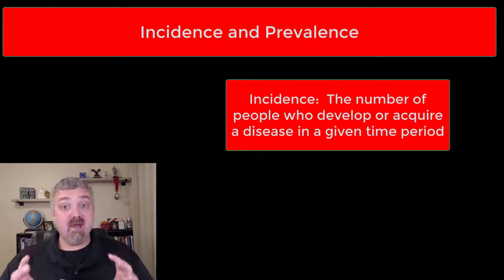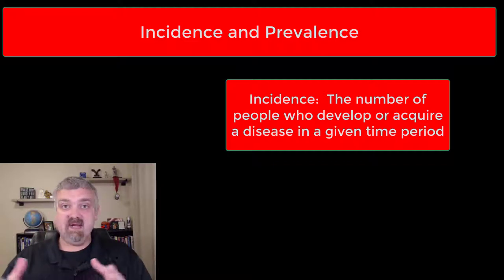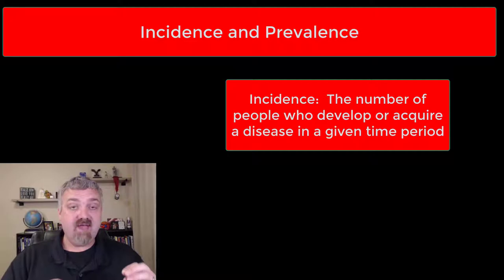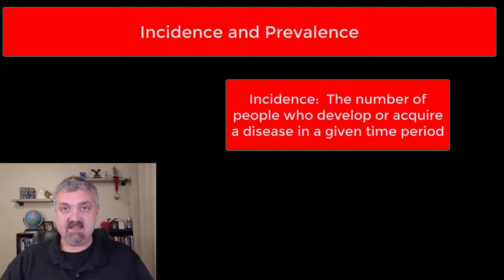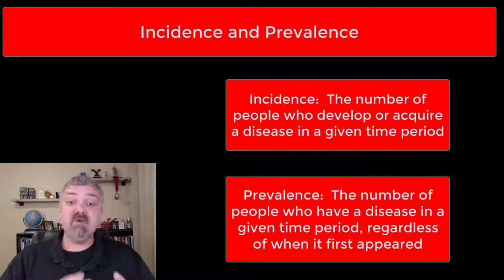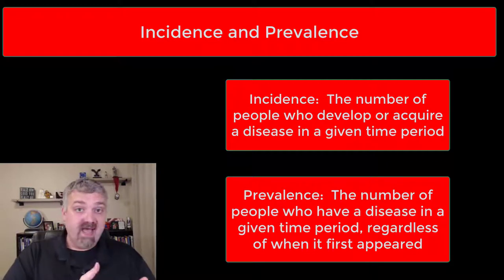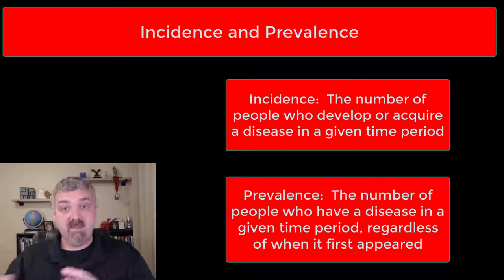Incidence is the number of people who actually develop a disease during a particular time period — how many people get a disease during a given time period. Prevalence is the number of people that actually have it, including people that already had it prior to this time period and still have it, and the people that acquire it during that time period.